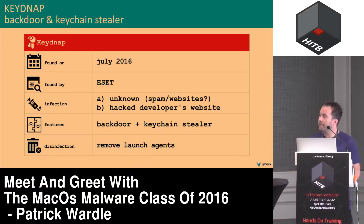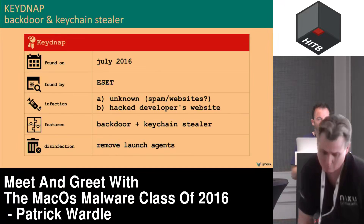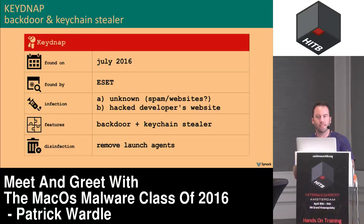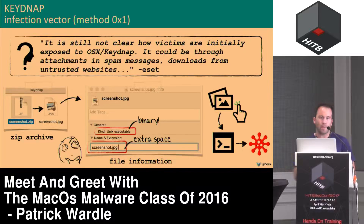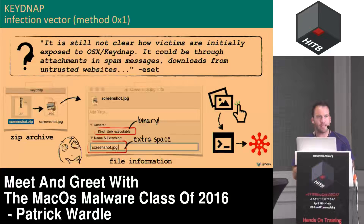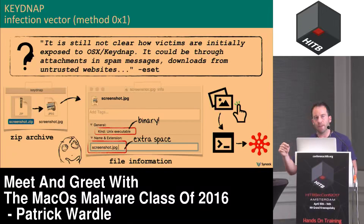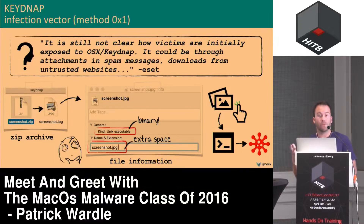The next sample is Keynap, discovered in July by ESET. It's a fairly standard backdoor, though it has an interesting propensity for stealing credentials from the keychain. Its initial infection vector was not known — probably via email or social engineering. What was known is it was distributed as a zip file, and if you unzipped it, it contained a single file called screenshot.jpg with a space at the end. That trailing space means when the user double-clicks it, instead of opening in an image program like Preview, it executes via the terminal — because it was actually an executable.